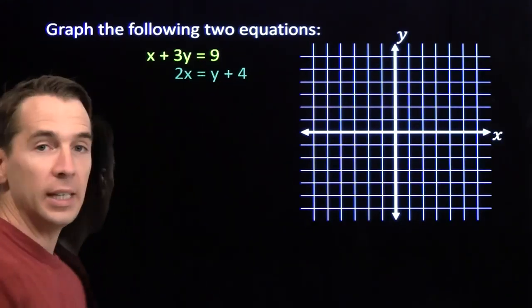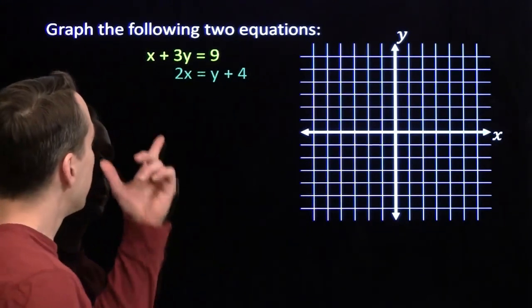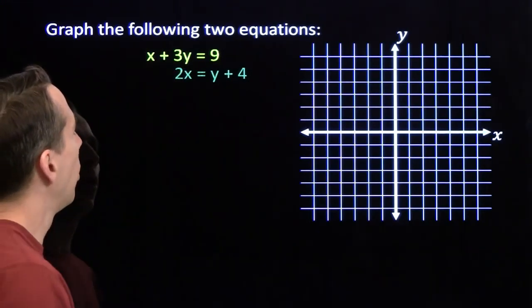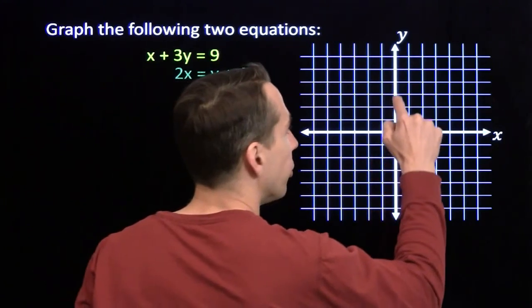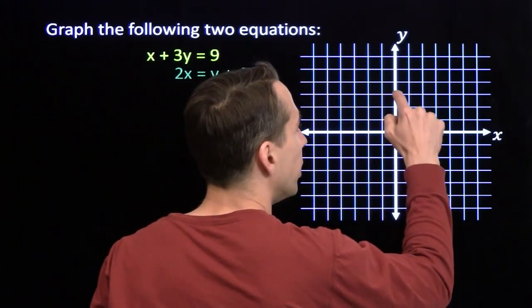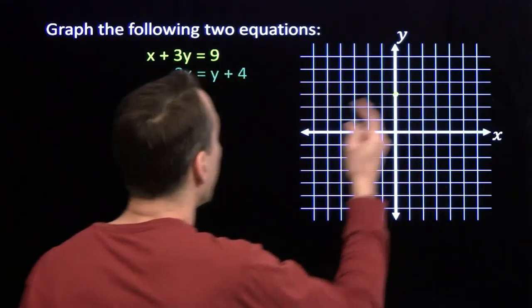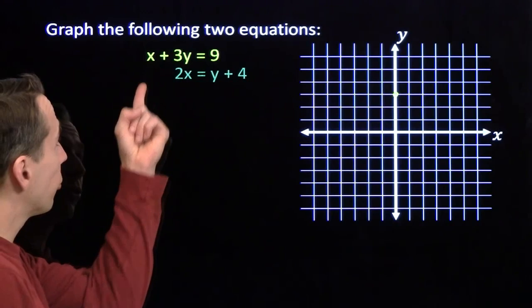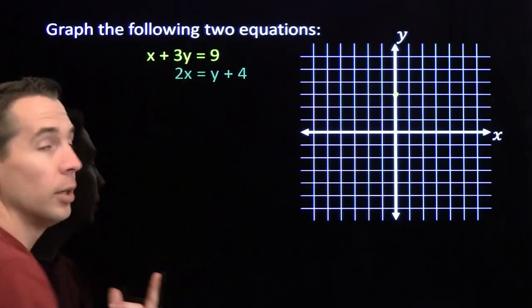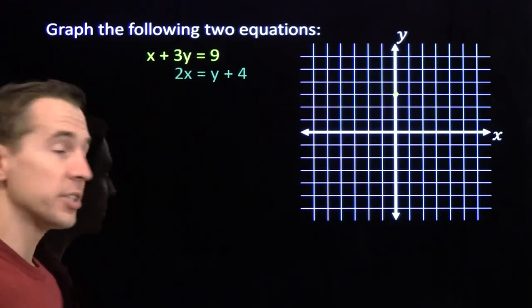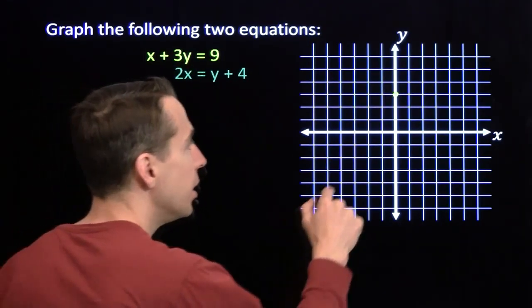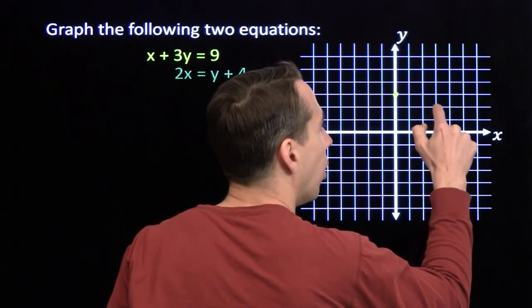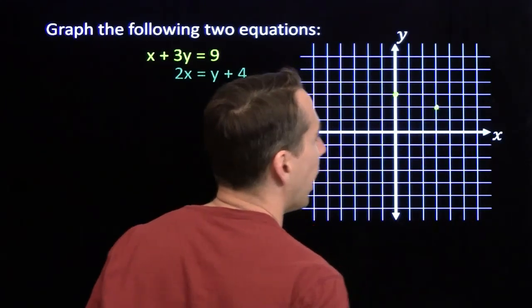We'll start off with the yellow equation here. If I put in x equals 0, I'm going to get y equals 3. So x equals 0, y equals 3 — that's one point on this graph. Now if I put in x equals 3, then y has to be 2; that'll give me 3 plus 6, that's 9. So x is 3, y equals 2 — also on the graph.